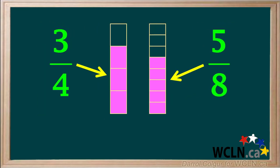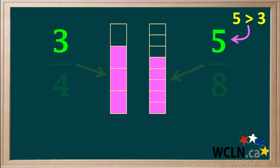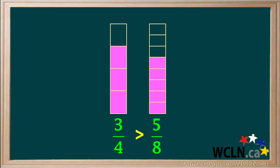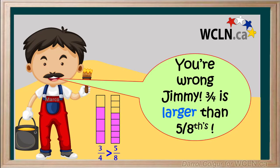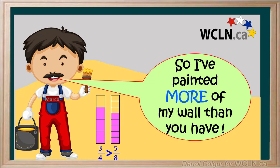Let's look at our fractions 3 quarters and 5 eighths, and we'll place them side by side. Even though the numerator 5 is greater than the numerator 3, we see that the fraction 3 quarters is actually larger than the fraction 5 eighths. Marco has painted 3 quarters of his wall, and as he points out, 3 quarters is larger than 5 eighths. So Marco has painted more of his wall than Jimmy has.